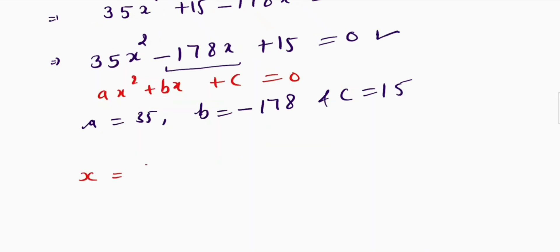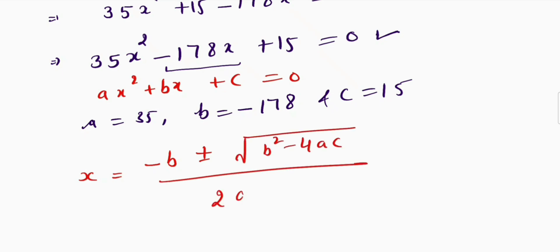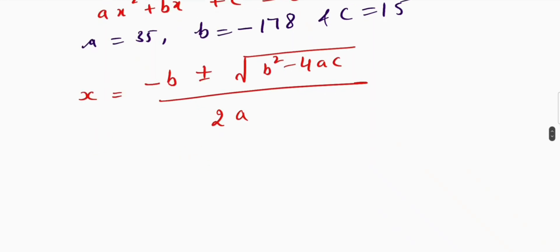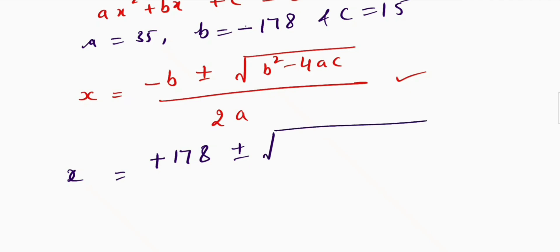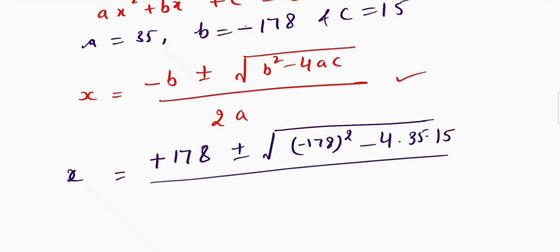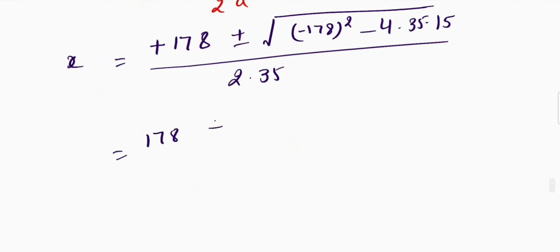Applying the quadratic formula: x equals negative b plus or minus square root of b squared minus 4ac, all divided by 2a. Substituting values: negative of negative 178 gives plus 178, plus or minus square root of negative 178 whole squared minus 4 times 35 times 15, divided by 2 times 35.